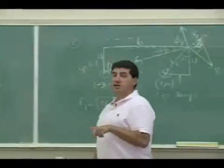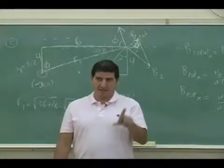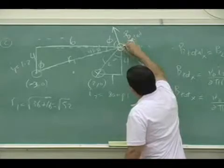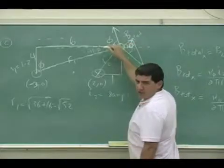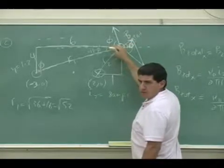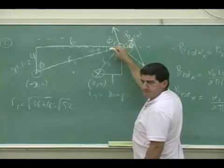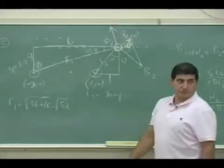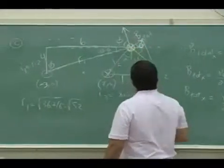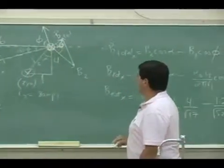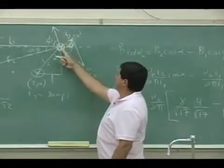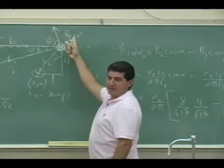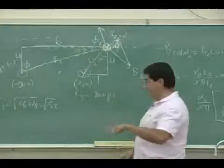Now if we go to the force, you see it's not simply going to be the current there. If I put the wire there — and the current is going into the board for part D — then the force isn't just simply going to be that current times the magnetic field. I would have to apply the right-hand rule again.